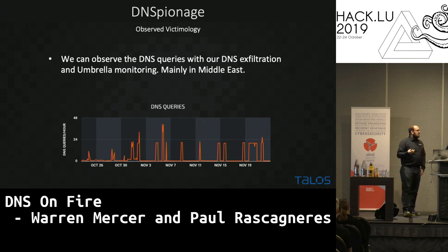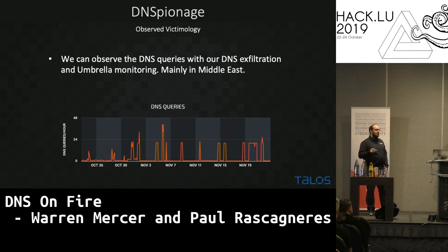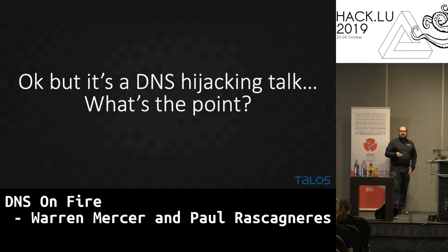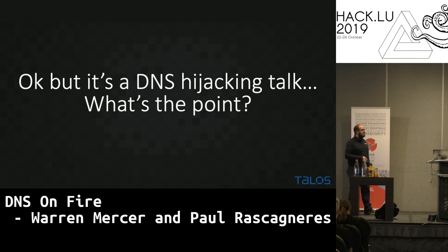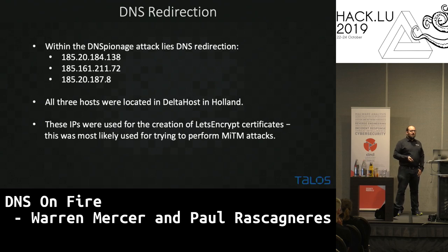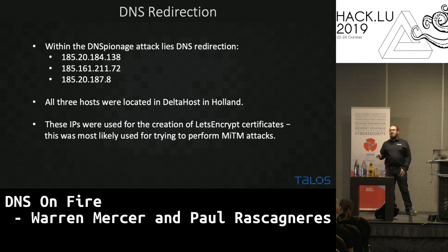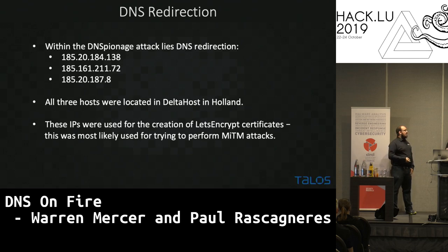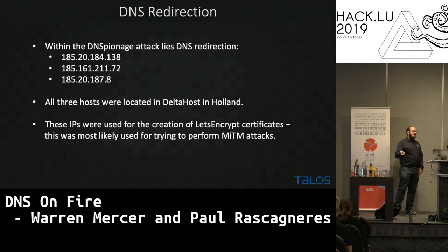We started checking our telemetry using OpenDNS and Cisco Umbrella — we have good visibility concerning DNS. We saw that mainly all the requests were from the Middle East, so it targets mainly the Middle East with a few exceptions. Now, you're speaking about DNS hijacking — the talk is about DNS hijacking — but we've spoken a lot about malware and HTTP. Here is the infrastructure used by the attackers, and we discovered that on one of these IPs we had a lot of .gov and country-code domains. One of these IPs was used by the attackers to exfiltrate data, but a few weeks before it was used to point to government email gateways and VPN gateways from a couple of countries in the Middle East.